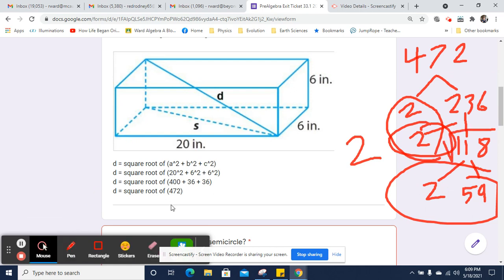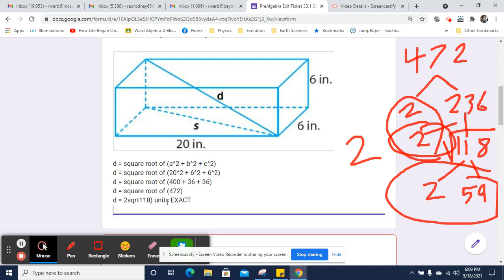So d is going to equal 2 square root of 118 units. Now, that's the exact answer. If we wanted to get the estimated answer, we can work that out.